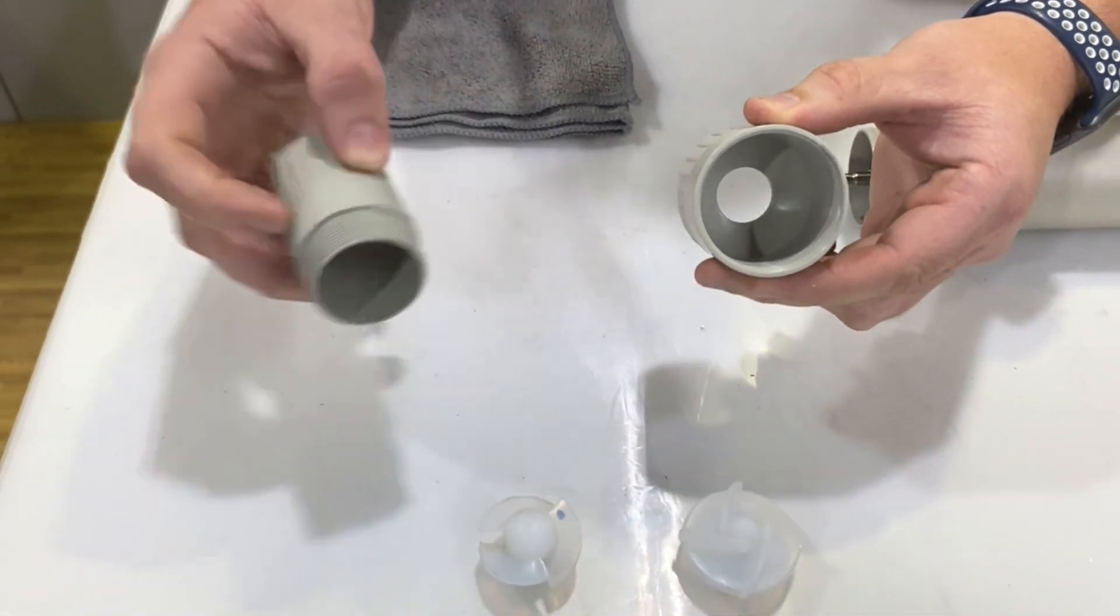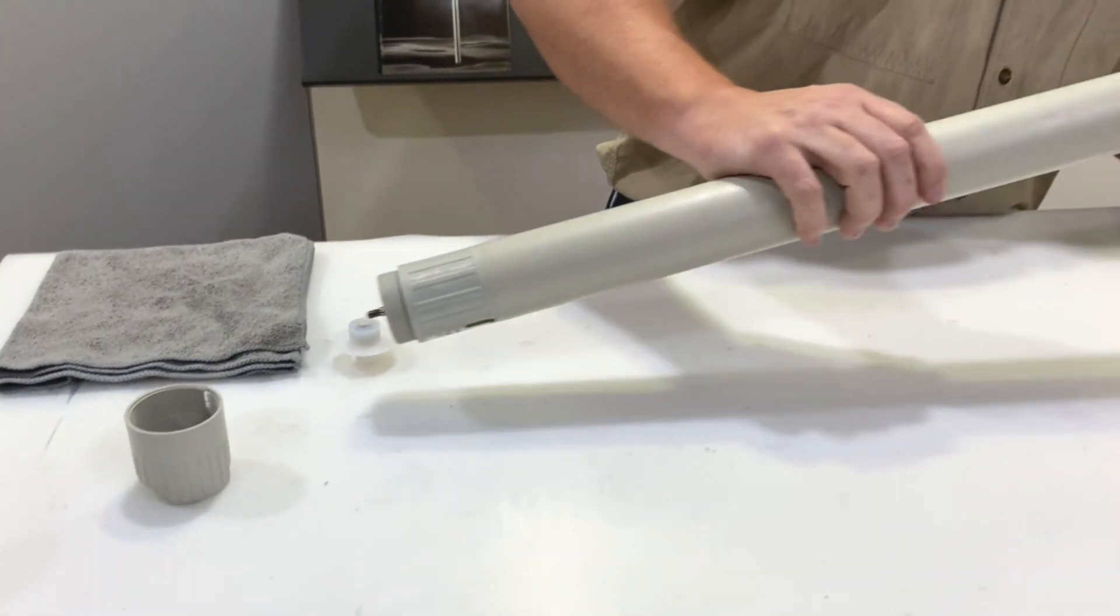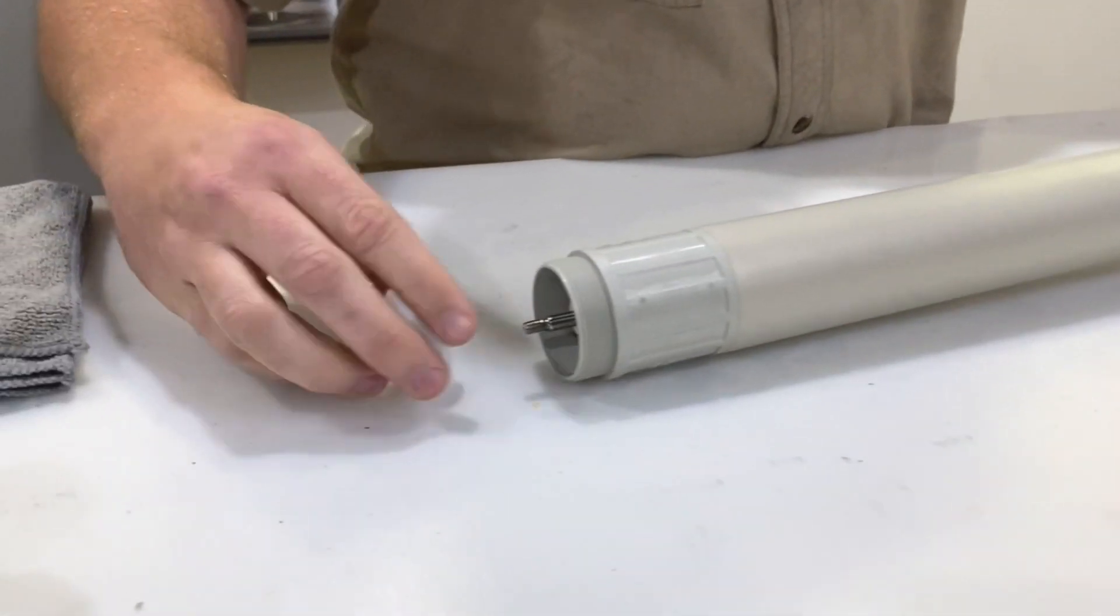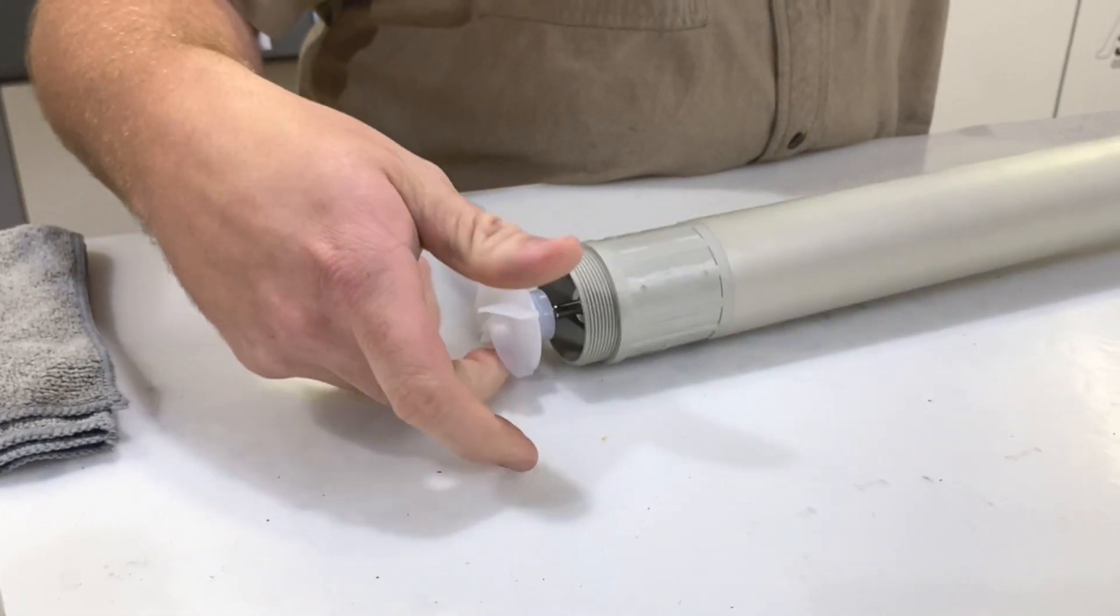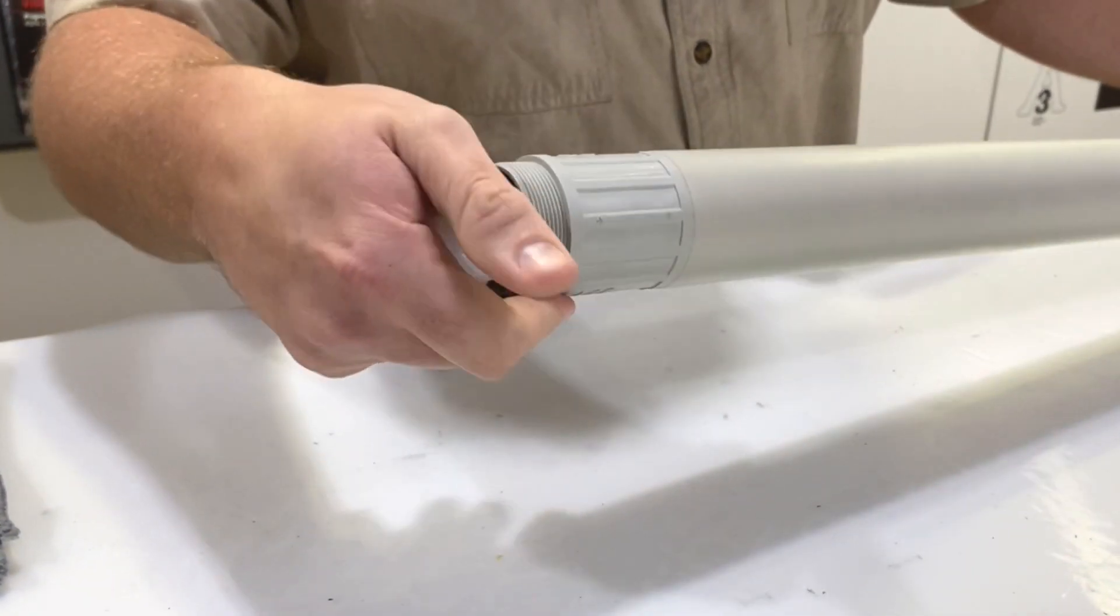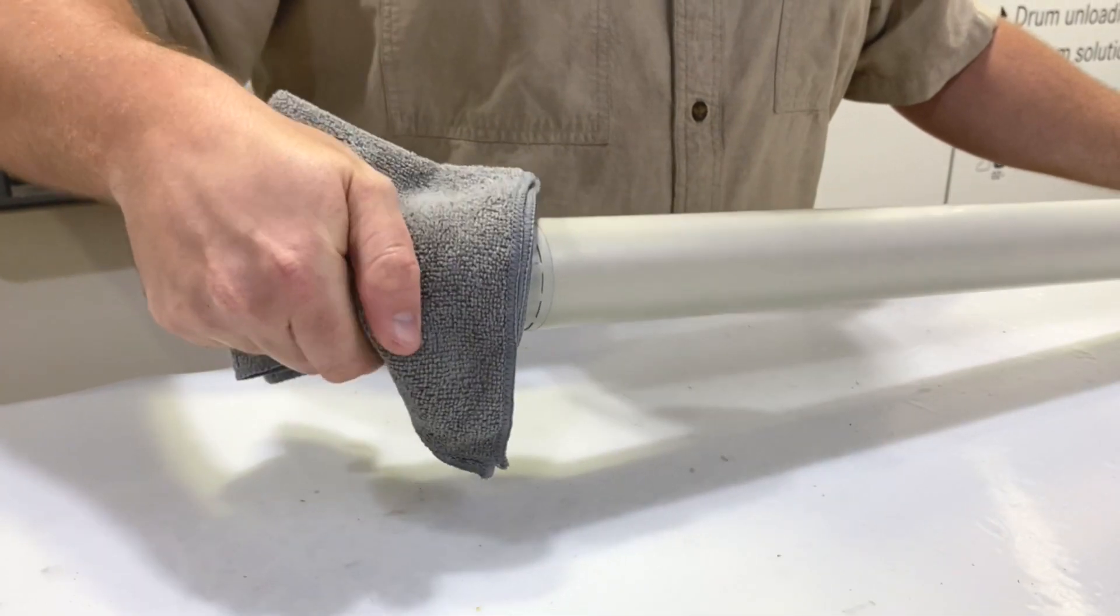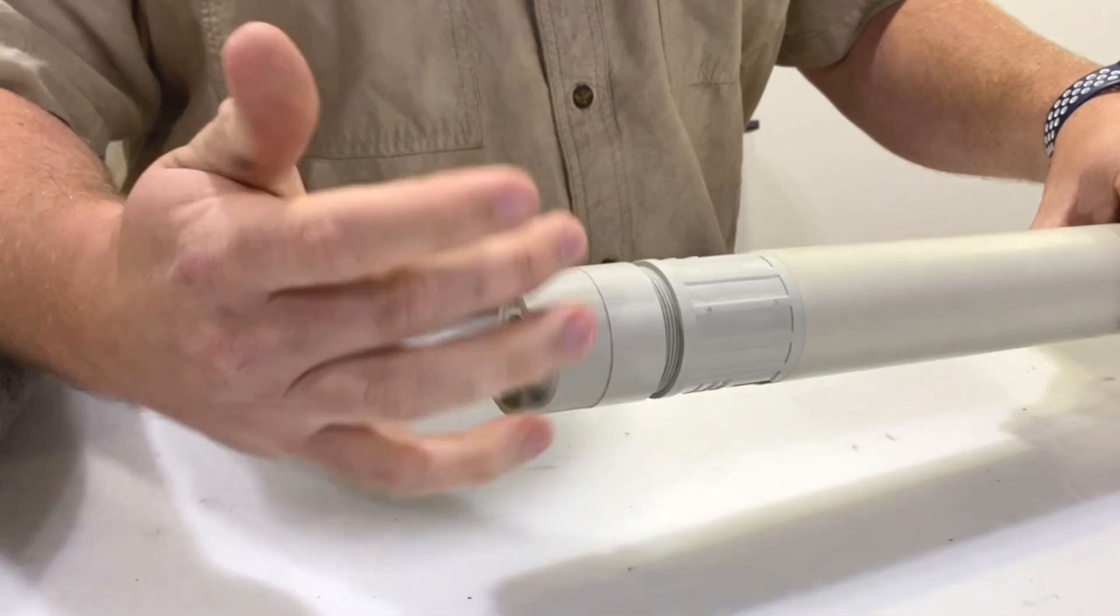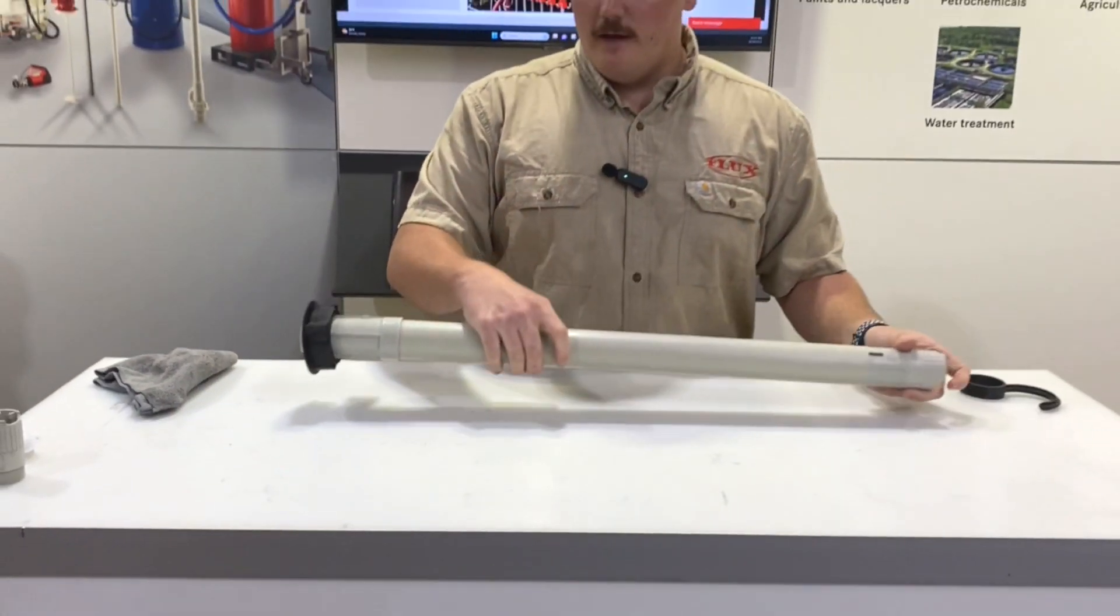So to reinstall the impeller, we'll hold the coupling cage still, and that will allow us to screw the impeller on without the shaft rotating. And once the impeller is on, just screw the foot piece on, and that's a full rebuild of the F424 polypropylene.